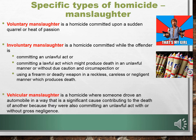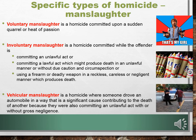Finally, we have vehicular manslaughter — a homicide where someone drove an automobile in a way that significantly contributed to the death of someone else because they were also committing an unlawful act, with or without gross negligence. We know this as the DUI death: you're driving under the influence, which is illegal, and you kill somebody — you can be charged with vehicular manslaughter. Thank you for watching this lecture and I look forward to seeing you in class.